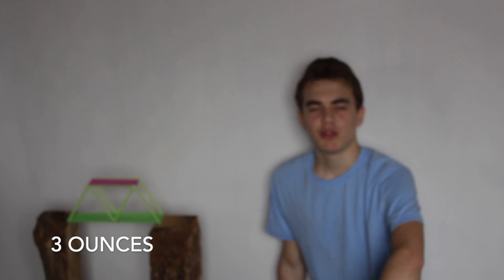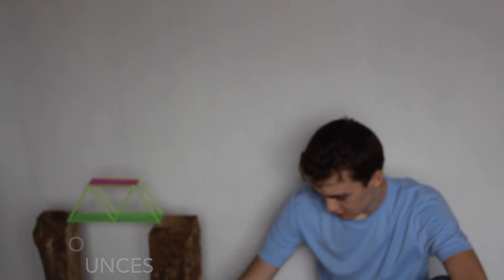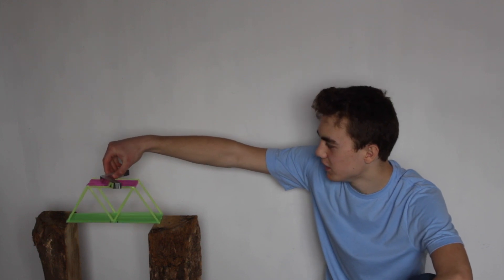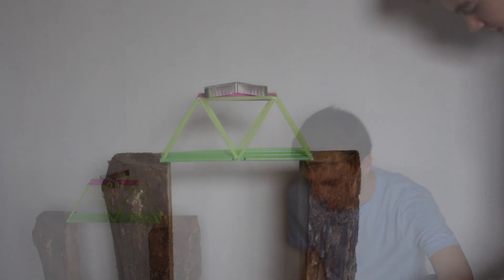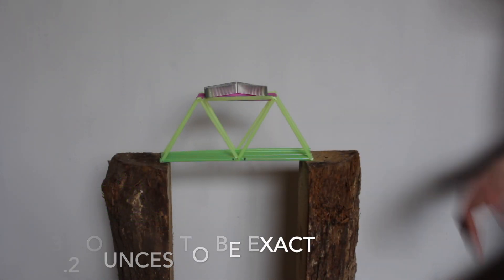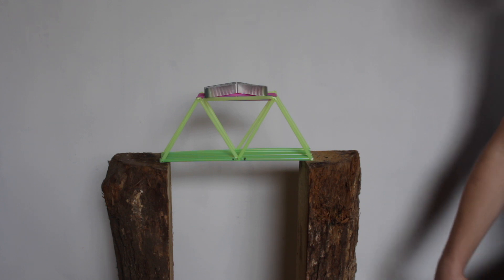We're going to start with about three ounces. I'm going to just place them on top of the bridge. We have three ounces, or three point two ounces to begin with. Let's keep adding more.